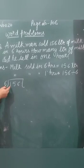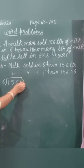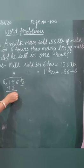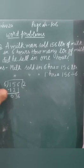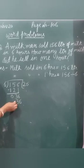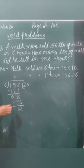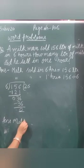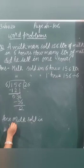Now, 156 divided by 6. Count the table of 6 till we get the smaller digit of 15. 6 twos are 12. Subtract it. 5 minus 2, we get 3. 6 will come down. 1 minus 1, we get 0. Now it becomes 36. Again, count the table of 6 till we get 36. 6 sixes are 36. Subtract it. 36 minus 36, we get 0. So the answer is, milk sold in 1 hour is equal to 26 liter.